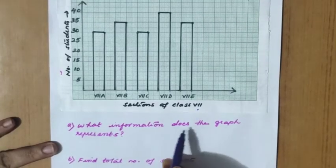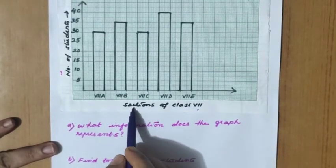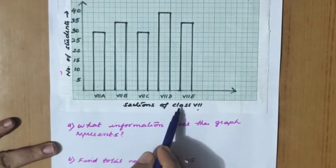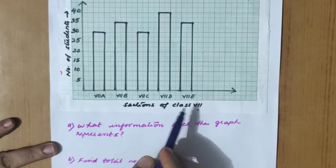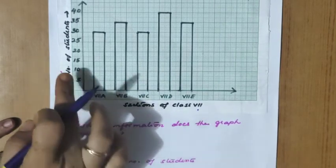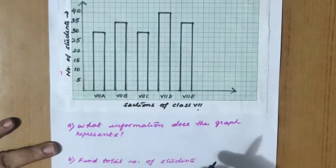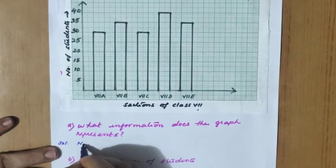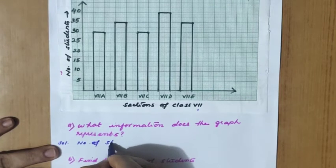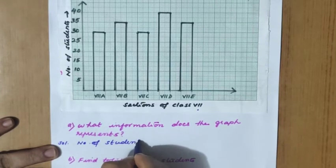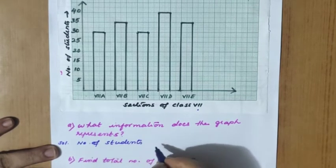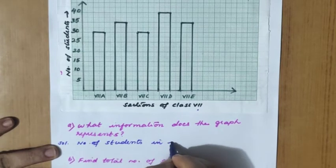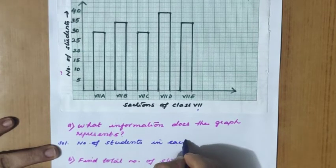Question: What information does the graph represent? Using the labels - sections of class 7 and number of students - we can say the graph represents the number of students in each section of class 7, that is 7th A, 7th B, 7th C, 7th D, and 7th E.